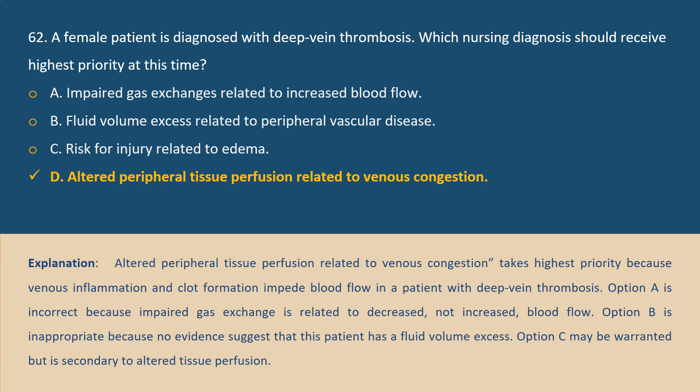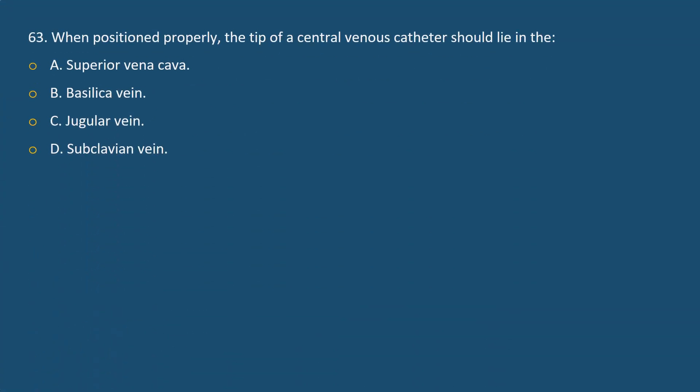Option C may be warranted but is secondary to altered tissue perfusion. Question 63: When positioned properly, the tip of a central venous catheter should lie in the: A) Superior vena cava, B) Basilic vein, C) Jugular vein, D) Subclavian vein.